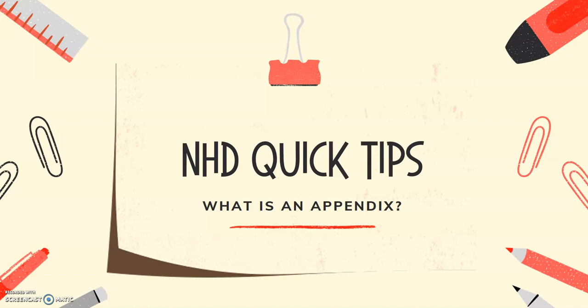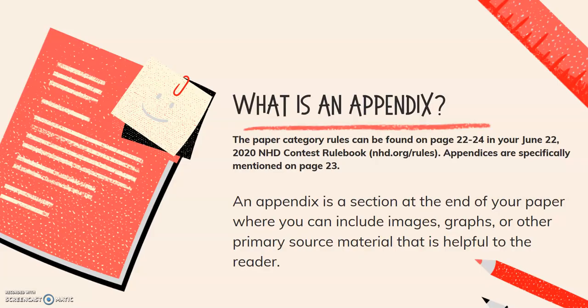So we should probably start at the beginning. Alina, what is an appendix? An appendix is a section at the end of your paper where you can include any relevant images, graphs, or other primary source material that is helpful to your reader. The paper category rules can be found on pages 22 to 24 in your NHD contest rulebook, and information specifically on the appendix can be found on page 23.